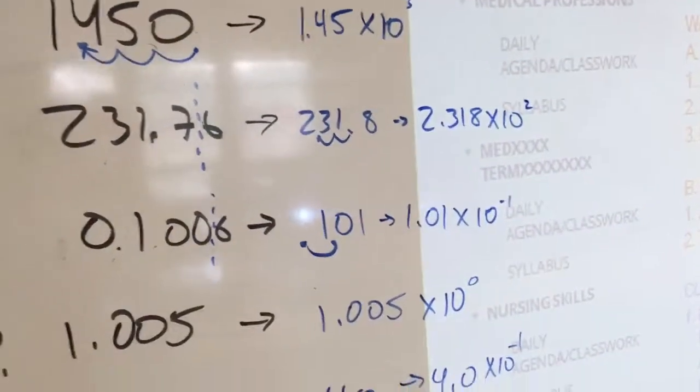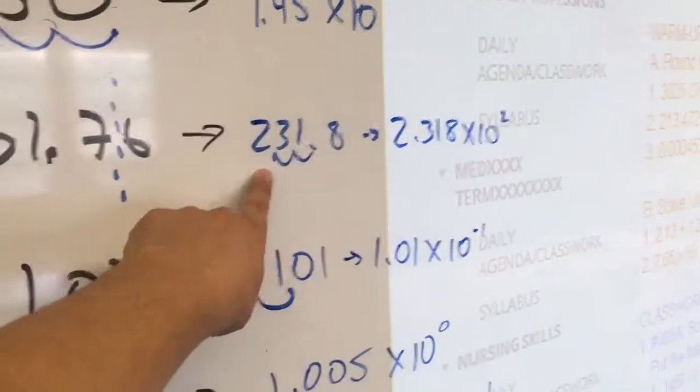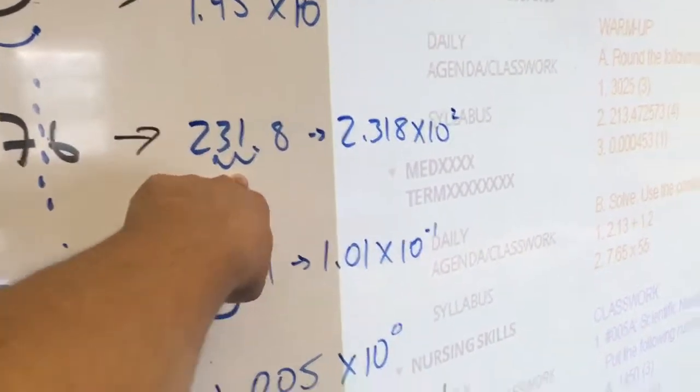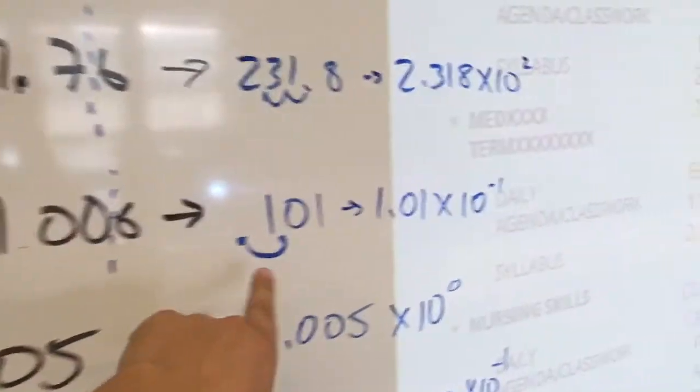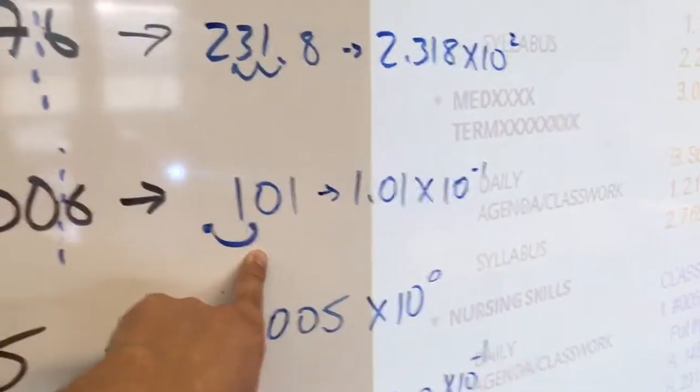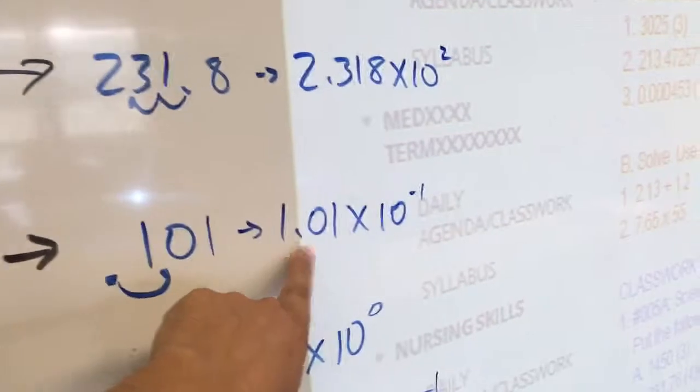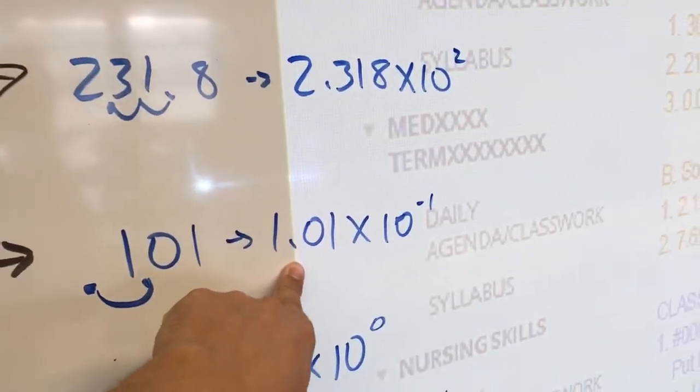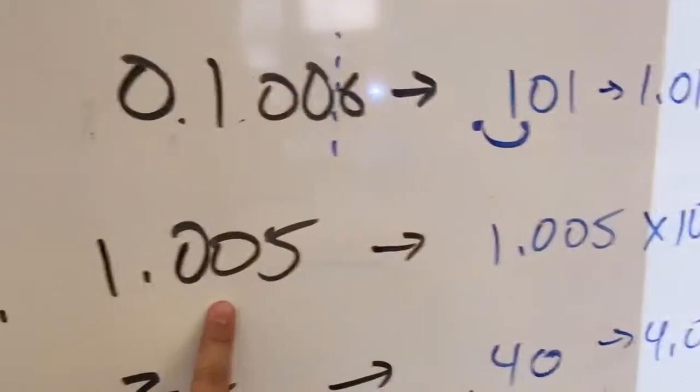And the rest of these are all the same. This you get four significant figures. You'd have to move the decimal point two times. This one you actually have to move the decimal point to the right, which means to get it back to its original number from this you would have to divide by ten, so negative one.